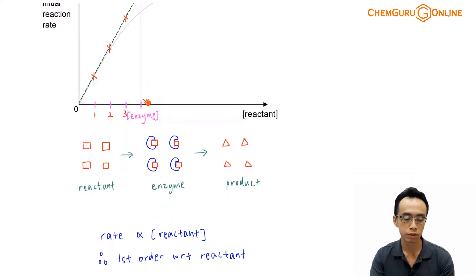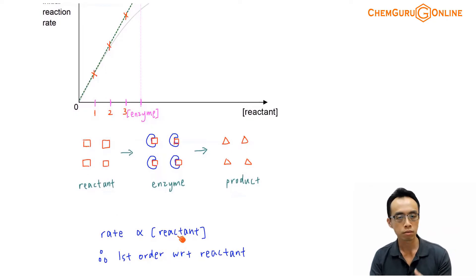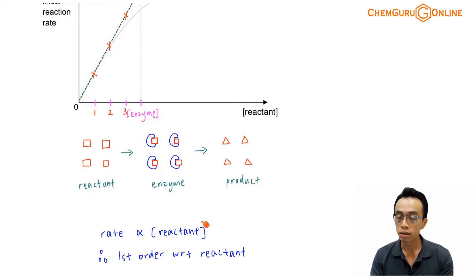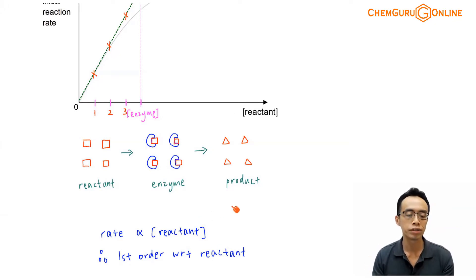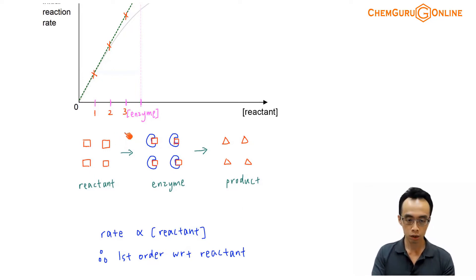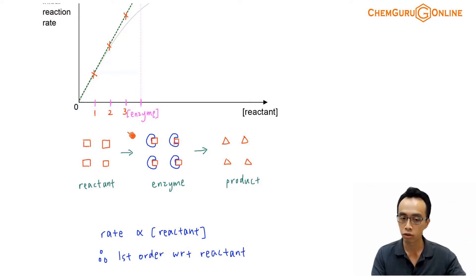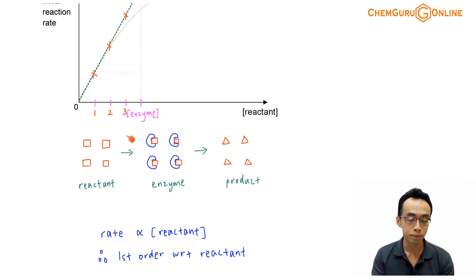Since this rate is directly proportional to the concentration of the reactant, this is actually first order with respect to the reactant. The concentration of the reactant increases, and there will be a proportional increase in the rate of reaction. So the first part of this graph, when the concentration of the reactant is less than the enzyme concentration, the reaction is first order with respect to the reactant.